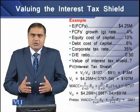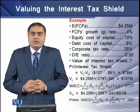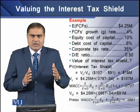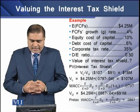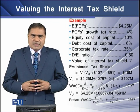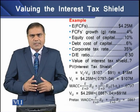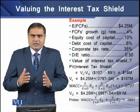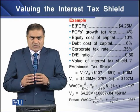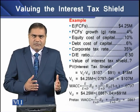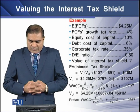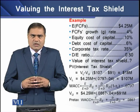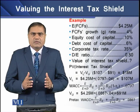The levered firm's present value is determined by discounting its free cash flows over the difference between its WACC and the growth rate, giving $107 million. The unlevered firm's present value is found by discounting free cash flows over the difference between the unlevered WACC and the growth rate, giving $91 million. The differential cash flows between the two firms thus yield the present value of the interest tax shield.